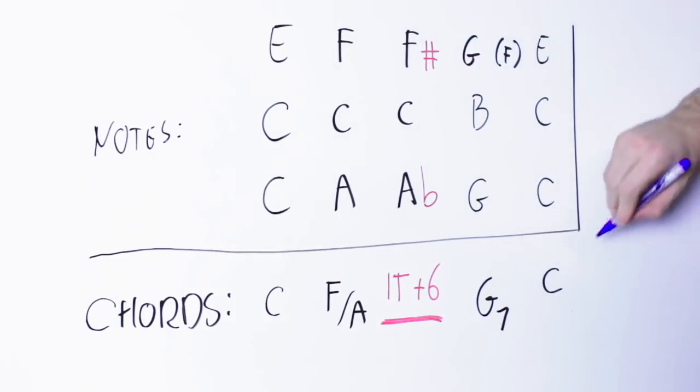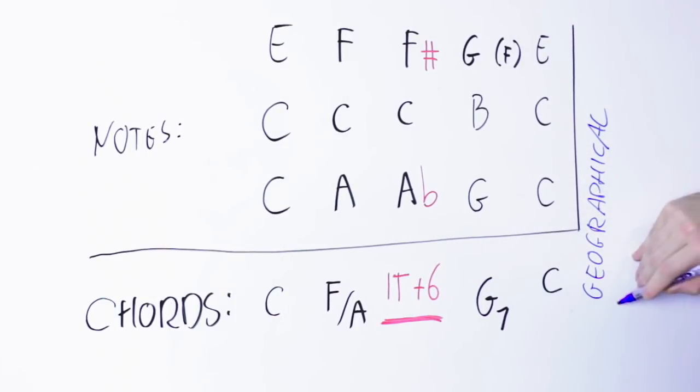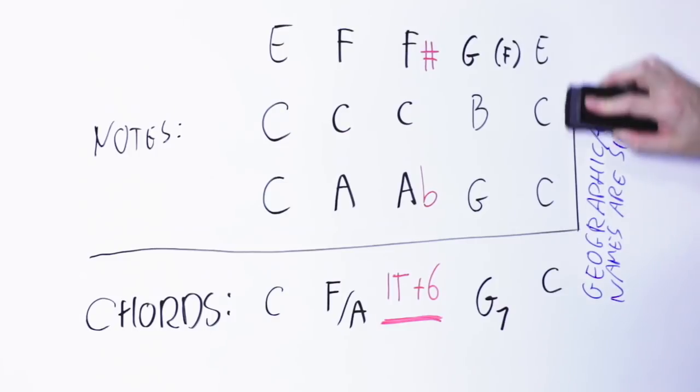Incidentally, let me also tell that all those names like Italian, German, French, etc. augmented sixth have nothing to do with the actual use of those chords. Musicians from Italy, Germany, and France use all the three versions indifferently. And definitely there is no evidence that the Italian augmented sixth was invented by Italians, the German by Germans, and the French by French. But that said, this one here is what we usually call an Italian augmented sixth.